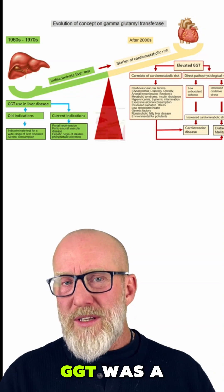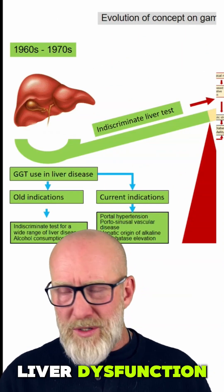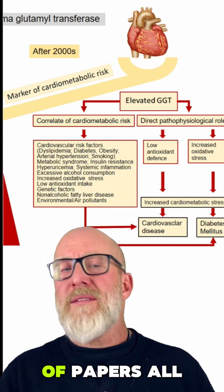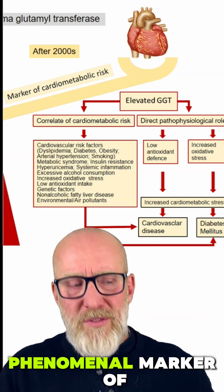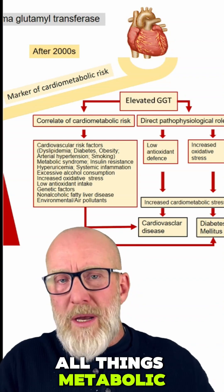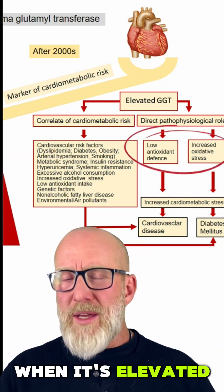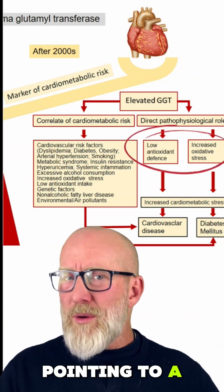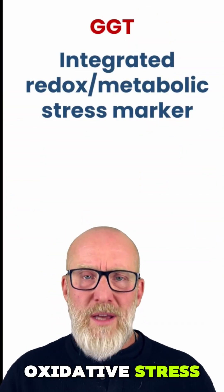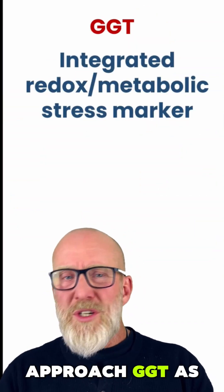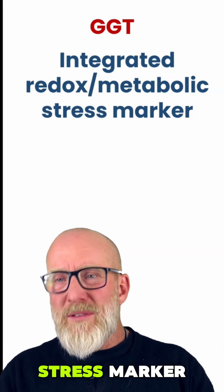Historically, GGT was a marker of either alcohol consumption or liver dysfunction, but today dozens upon dozens of papers all suggest that when GGT is elevated, it is a phenomenal marker of all things metabolic and/or redox. That's because when it's elevated, it might be pointing to a low antioxidant defense and/or increased oxidative stress. That's why we should approach GGT as an integrated redox and metabolic stress marker.